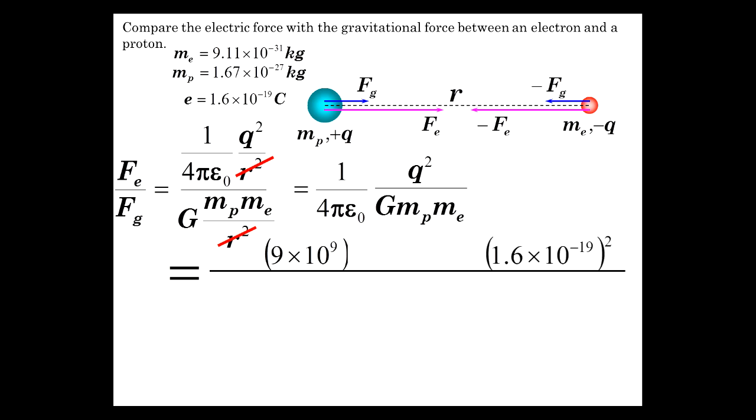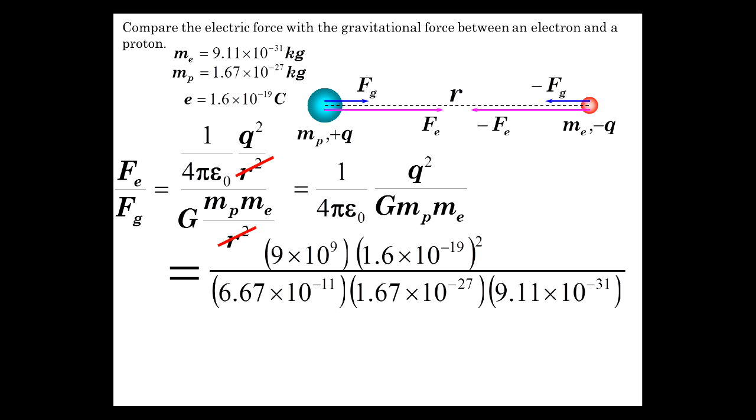1 over 4 pi epsilon 0, 9 times 10 to the 9th, times the elementary charge squared over the gravitational constant, very small number, the proton mass, an extremely small number, and the electron mass, an extraordinarily small number. So putting all that together, we get the facts. Nothing but the facts here.